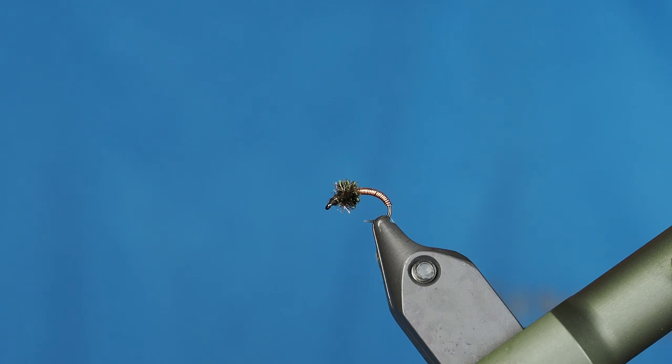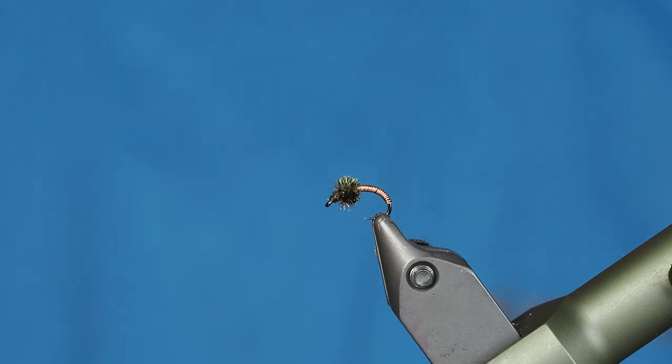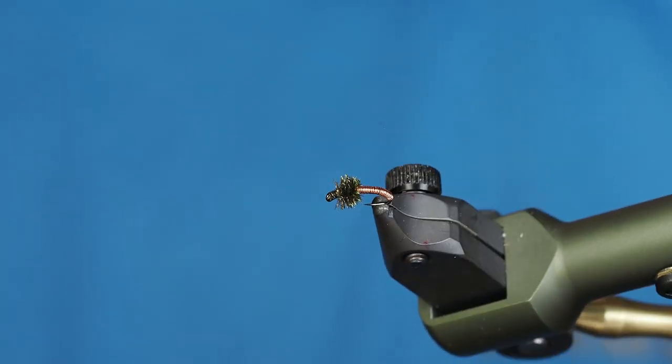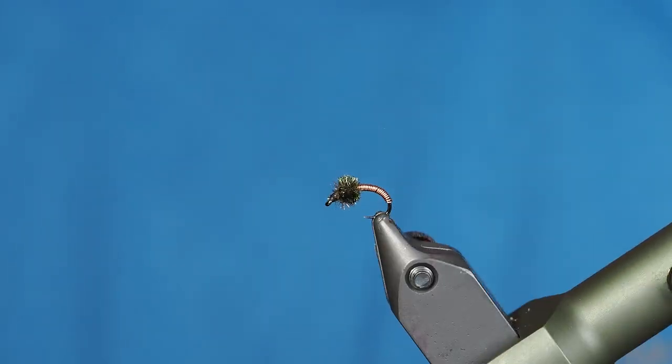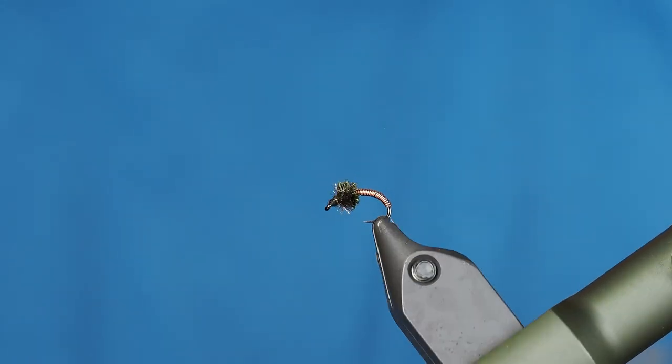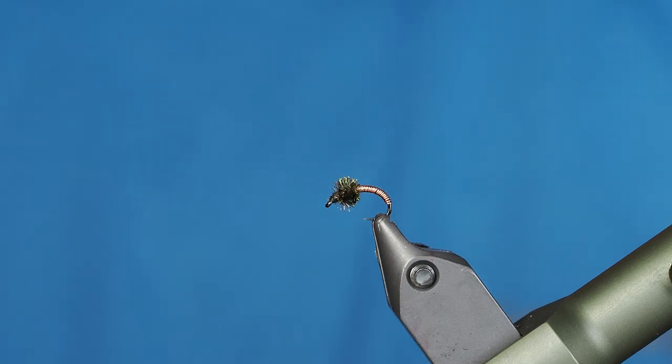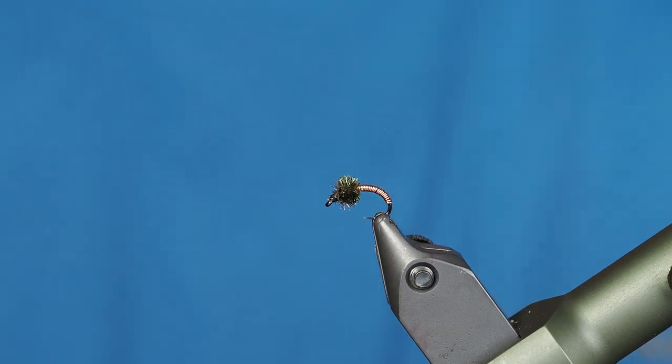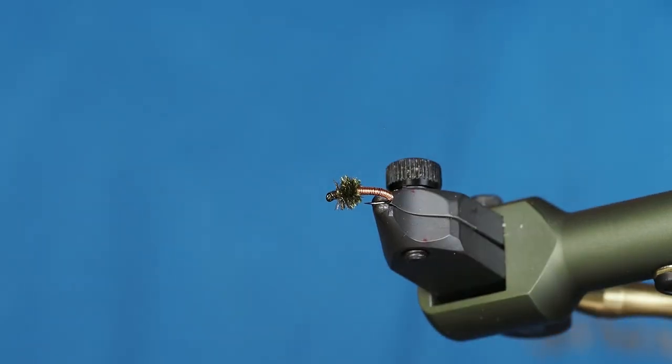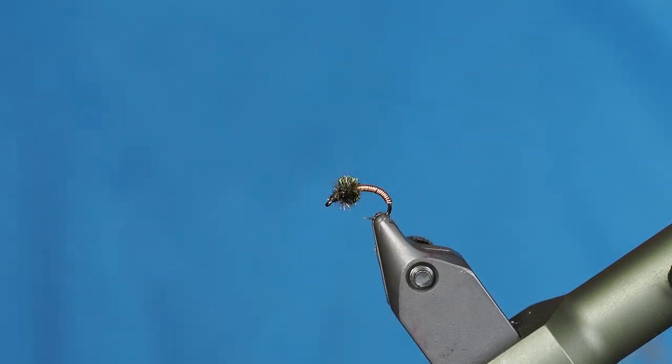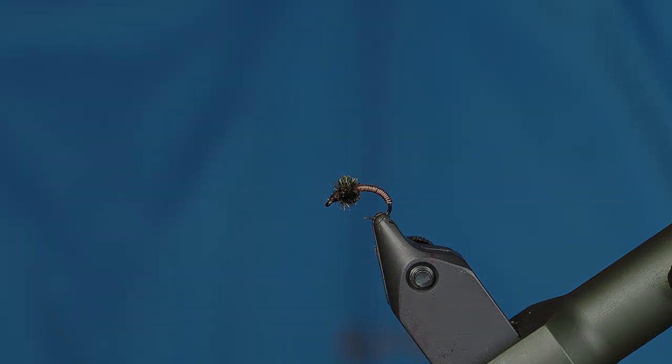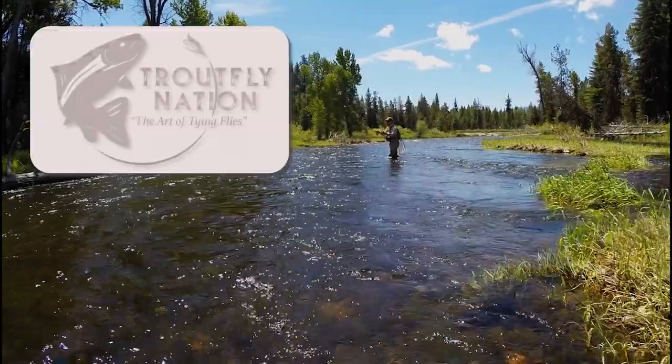It's more of a nymph pattern. It's going to go along the bottom. I'll tie these much smaller than a 16, usually I'm going to tie them in an 18 or 20, 22 if I'm feeling brave, just because it just leads to frustration out on the water because I'm getting too old and I can't see to get a size 22 on my tippet. So anyway, a really good beginner pattern, an effective pattern. Throw yourself a hook in your vise, give this one a shot.